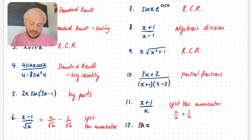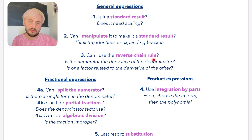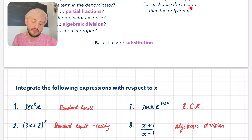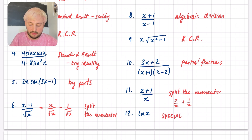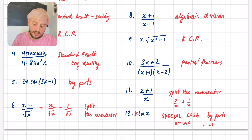Number 12 looks like it should be a standard result, but it isn't — it doesn't belong in the list of things we know how to integrate. You can't manipulate it, you can't do the reverse chain rule, and it's not fractional. ln x is a very special case: you will always do integration by parts and you choose the ln term for U. So this is a special case — integration by parts where U is ln x and V' is 1. If you think about this, it is 1 multiplied by ln x.